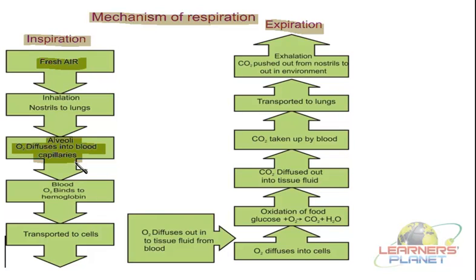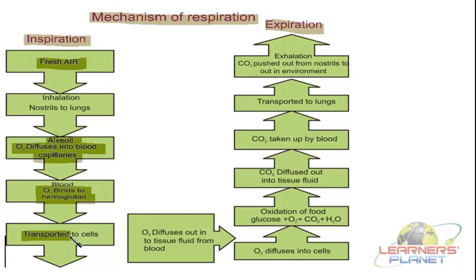Now oxygen is not soluble in the blood, so it needs a transporter. That transportation is performed by the pigment present inside the blood on the red blood cells, which we call hemoglobin. Hemoglobin attaches to the oxygen and carries it to the target cells — that is, all throughout the body in each and every cell. The blood is then transported to different target sites.